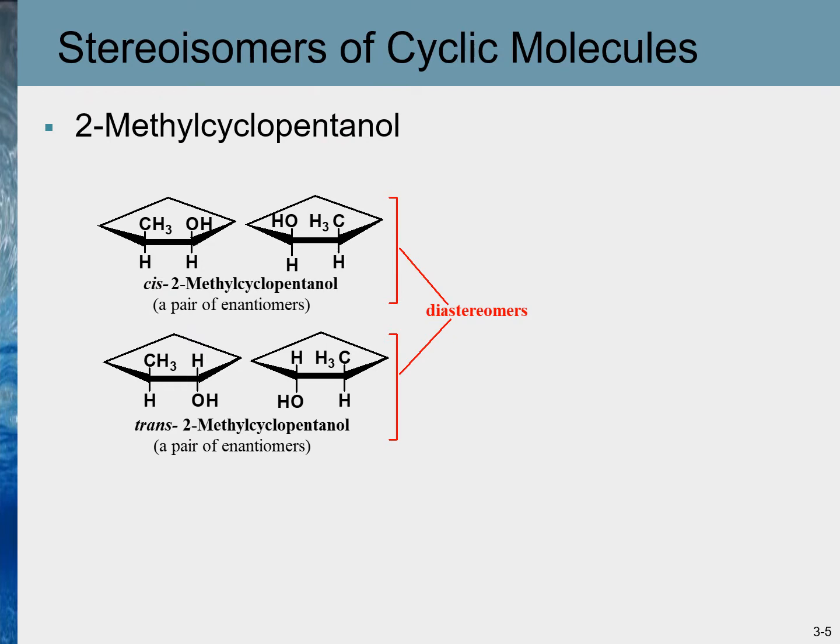We can analyze stereoisomers in cyclic compounds the same way as in linear molecules. Although many different kinds of cyclic compounds with multiple stereocenters exist in nature, we will concentrate mainly on cyclopentane and cyclohexane molecules. Let's start with 2-methylcyclopentanol, a derivative of cyclopentane, which has a five-membered carbon ring structure.